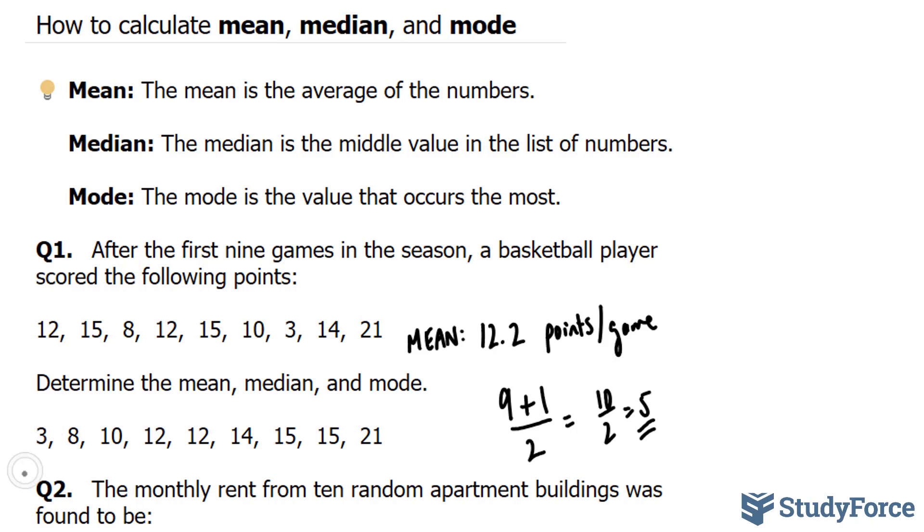The fifth number is 1, 2, 3, 4, 5. 12 represents the middle number. So our median is equal to 12.